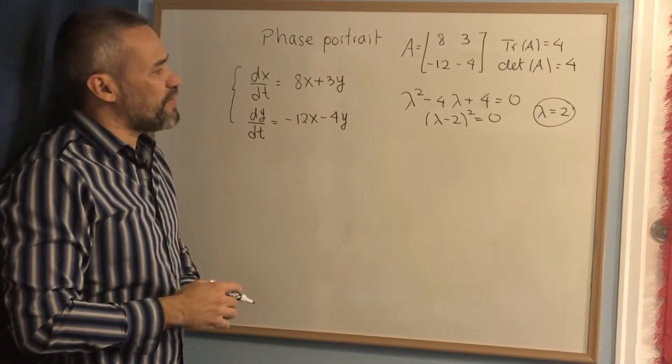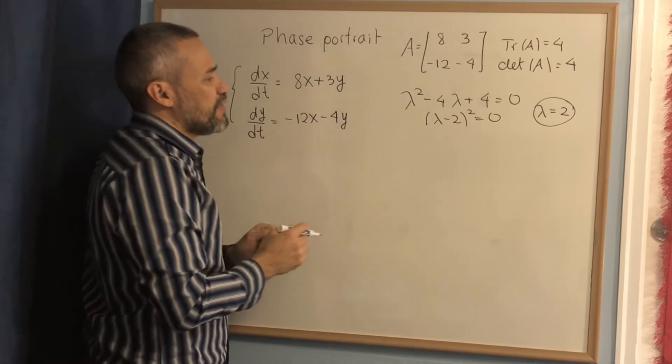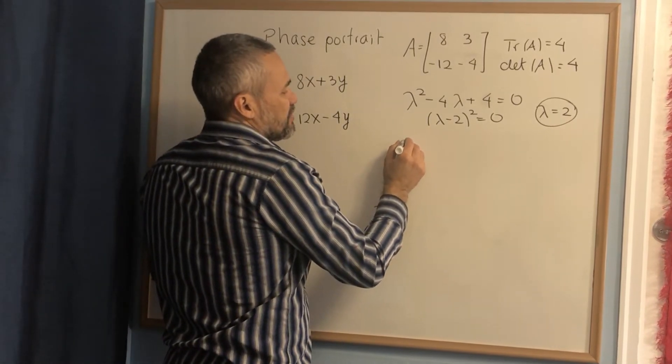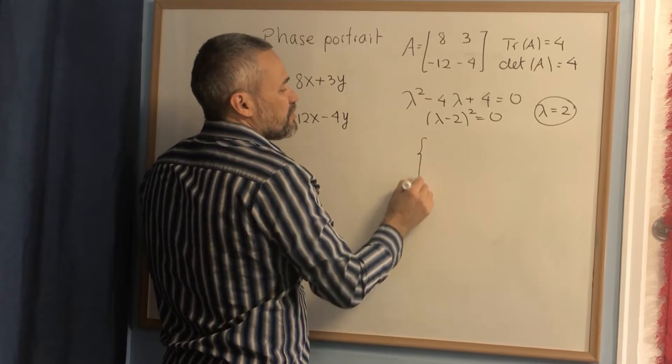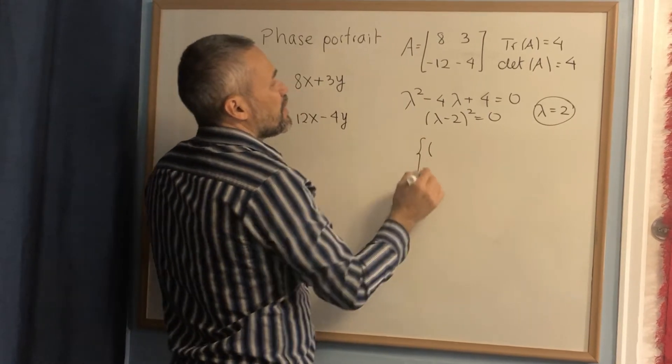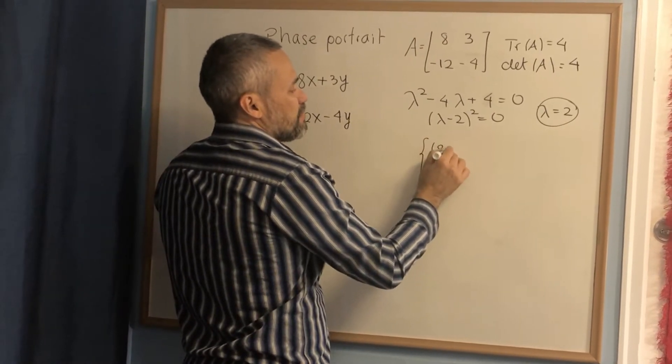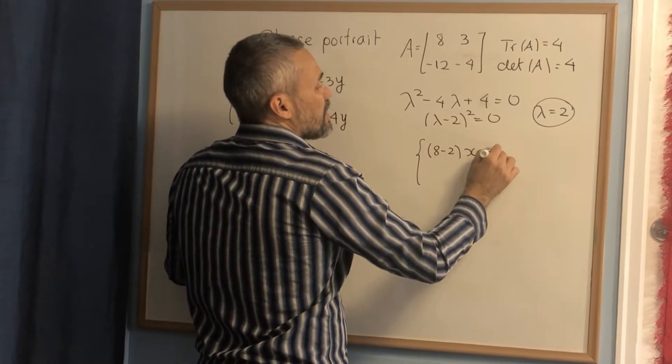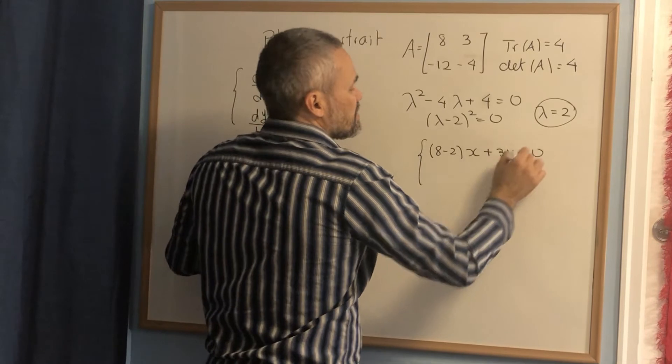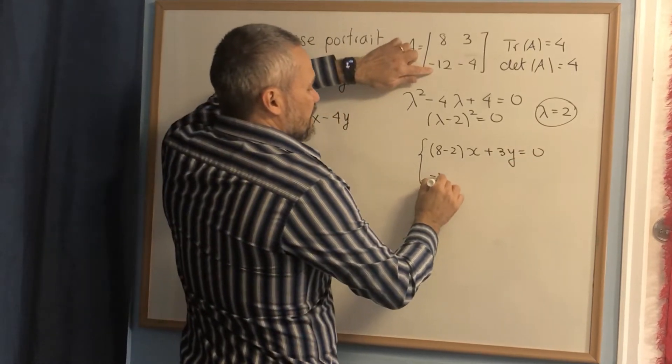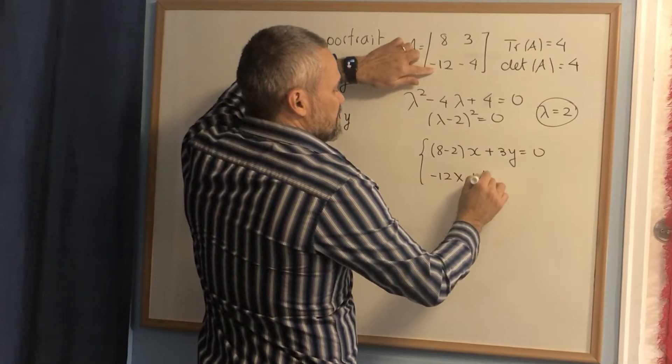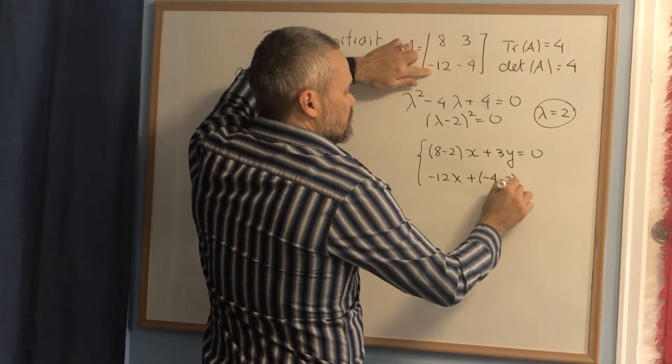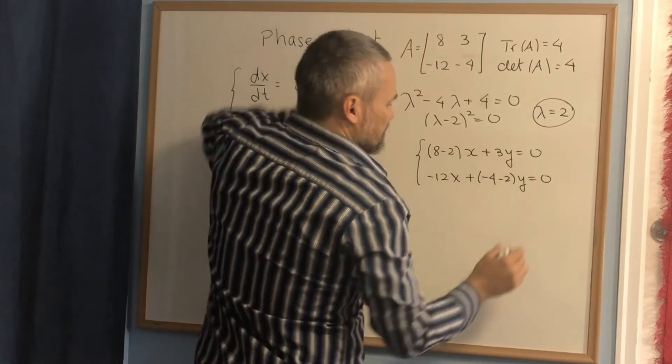In order to do the phase portrait, we need to compute the eigenvector. To compute the eigenvector, we solve the system: 8 minus 2 times x plus 3y equals 0, and negative 12x plus negative 4 minus 2 times y equals 0.